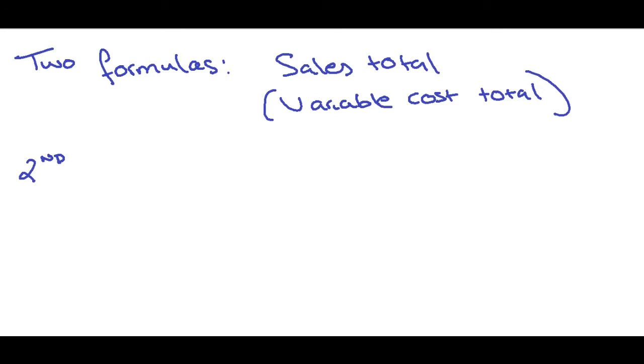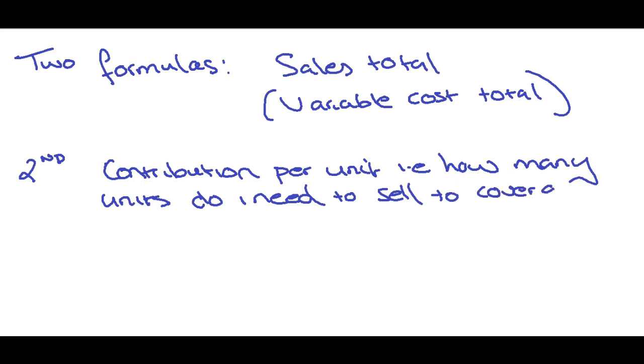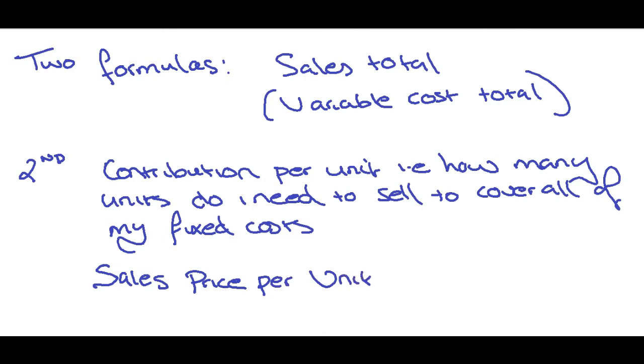So this is to work out the contribution per unit, how many units do I need to sell to cover all of my fixed costs? And again, we're almost using the same thing. So it's quite as simple. So it's just the sales price per unit. So how much can I sell a particular item for minus your variable costs, which gives you your contribution per unit.